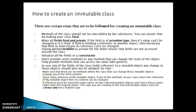The next point says: don't share the reference of the mutable object. If any of the methods of your class return the reference of the mutable object, then its content can be changed. And if any reference must be returned, create copies of your internal mutable object and return those copies rather than the original object. The copy you are creating must be a deep copy, not a shallow copy.